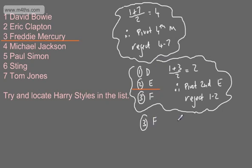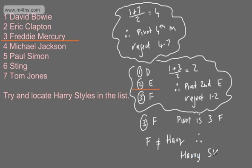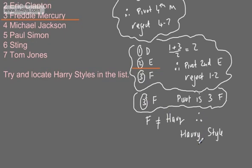So we've got position 3, Freddie Mercury. The pivot is now the 3rd, which is Freddie Mercury. We can say that Freddie is not Harry Styles, therefore Harry is not in the list. What we've done is considered that we've only got one value left - this is a pivot, and it would be our target. Our target isn't Harry Styles, therefore it's not in the list, because we've got no other pieces of data.